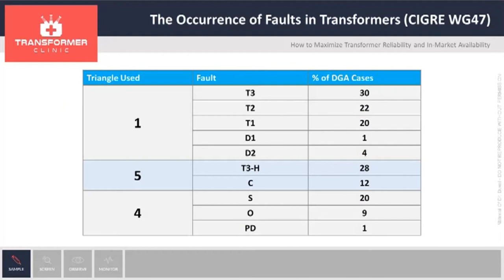Most faults observed in transformers in service are thermal faults in more than 90% of cases. High temperature faults T3/T2 in oil only, or T3H, occur in 28% of cases. Stray gassing of oil S accounts for 20%, overheating O for 9%. So in the majority of cases, gas formation in transformers is not a very big concern. Hotspots with possible carbonization of paper account for 12%, arcing D1/D2 not more than one or a few percent, and corona partial discharges PD in only 0.3% of cases.